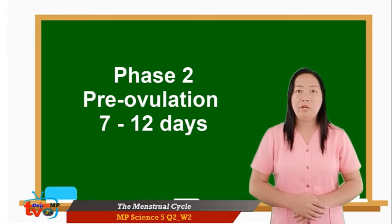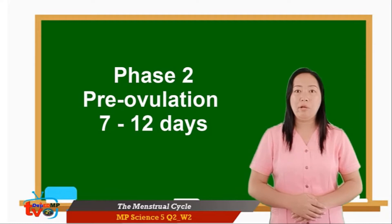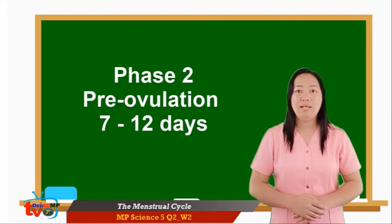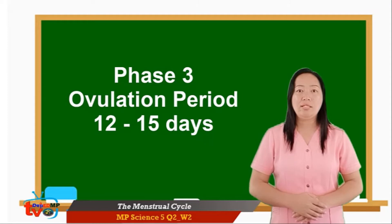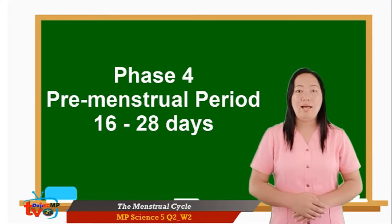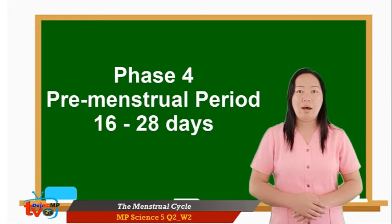Phase 2 is the pre-ovulation phase. This happens during days 7 to 12. Phase 3 is the ovulation period or fertility phase. This happens during days 13 to 15. Lastly, Phase 4 is the pre-menstrual phase. This happens during days 16 to 28.